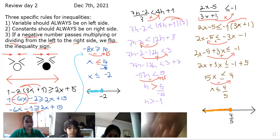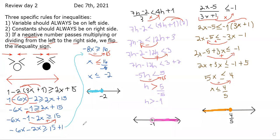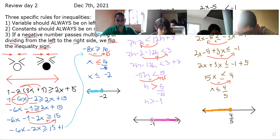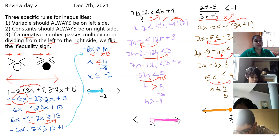Any questions? A student asks: when the answer is negative, do we flip the sign? The clarification: we flip the sign when the number that is with the variable at the end is negative — like negative 8x. To leave the variable alone I divide by that number, and if that number is negative I flip the sign. If it's positive, I keep it. That's everything for the second day of reviews.